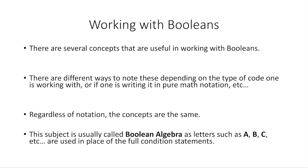This subject is usually called Boolean algebra when it's taught in college. And letters that are used are usually capital A, B, C, D, E, F — those are usually the first few letters of the alphabet in their capital letters used in place of the full condition statement. So we're assuming that letter A now represents a condition statement like 'six is greater than four' or something like that — like the condition statements we were looking at just now.